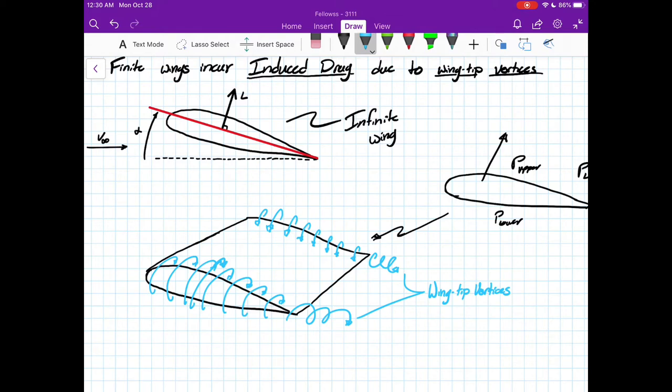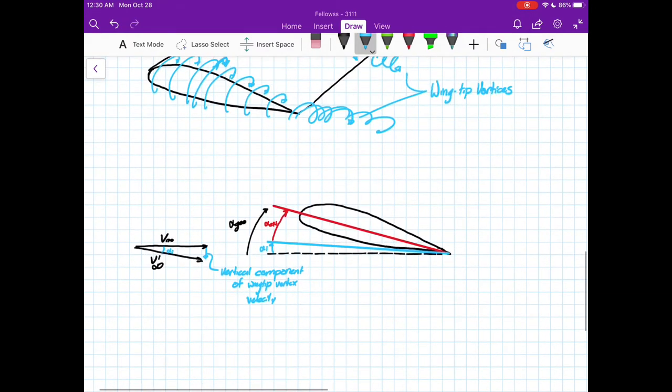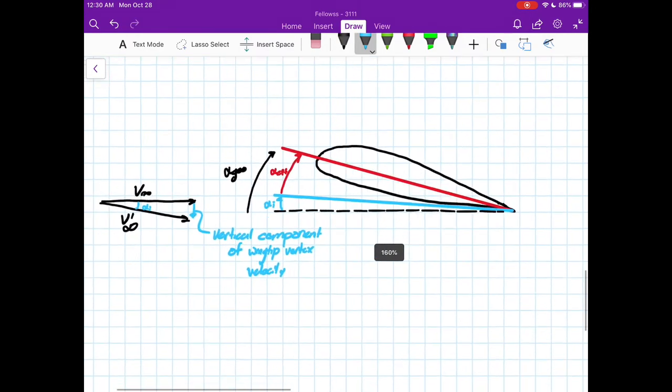At the tips is where the flow has this opportunity to leak out on top, and we end up with these curly Q vortices that leak off the sides as a result of that.